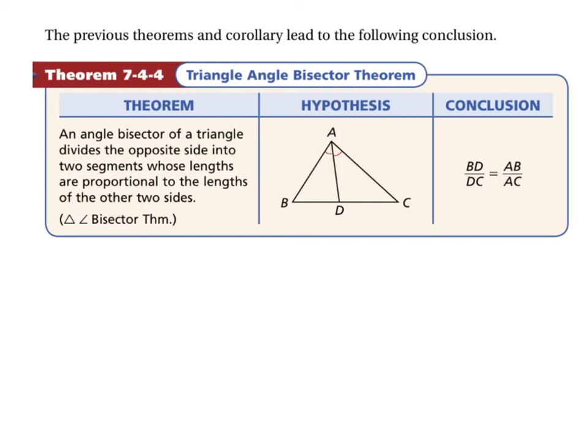Here's what it states. An angle bisector of a triangle divides the opposite side into two segments whose lengths are proportional to the lengths of the two other sides. Let's slow this down and start over again. If we bisect an angle in a triangle, that means that the lengths of the sides across from it that's been divided.